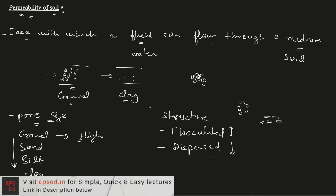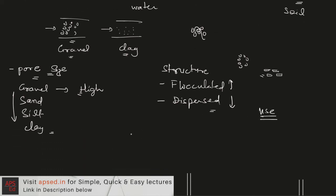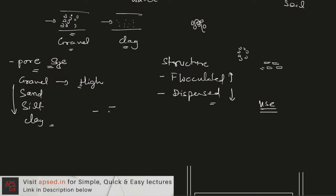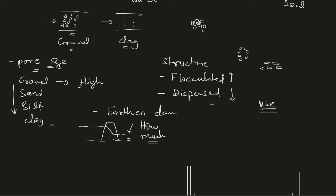So what is the use of this property — permeability? There are many practical applications. For earthen dams, seepage takes place from upstream to downstream, and we need to find out how much water will be lost due to seepage and what measures can safely reduce the amount of water being lost.